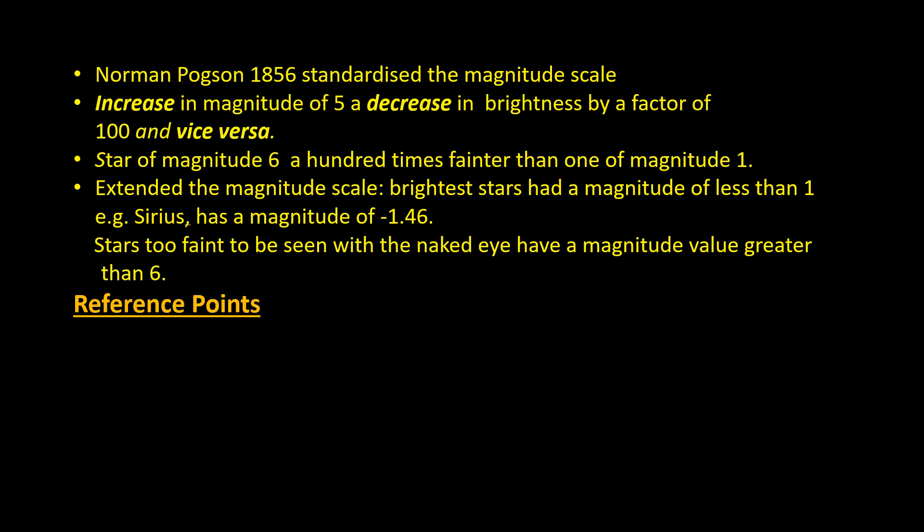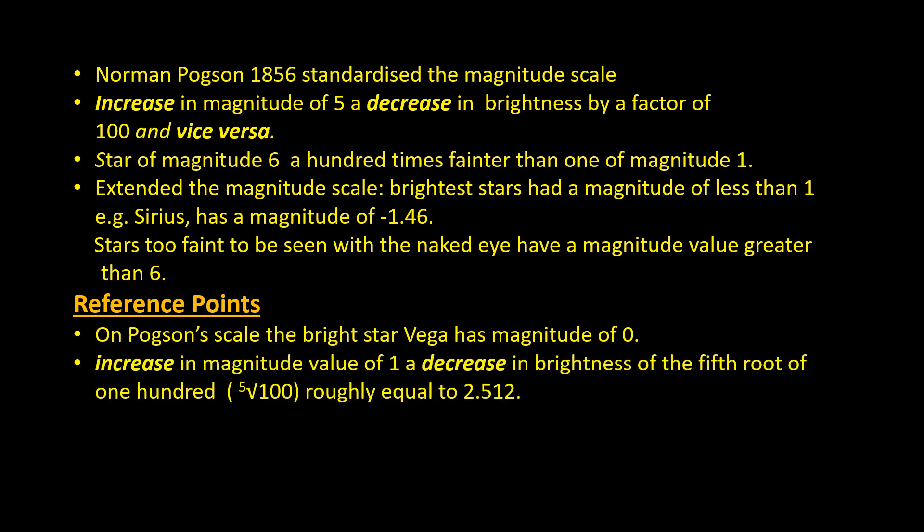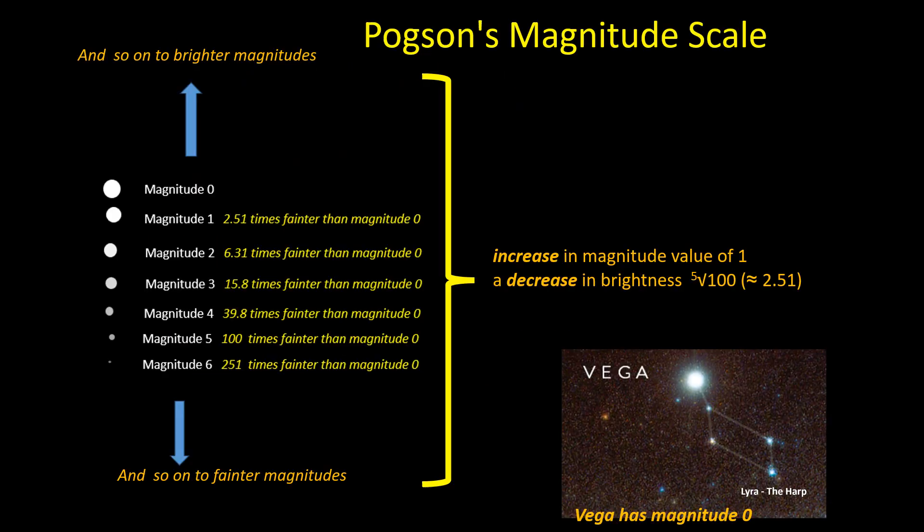Any scale must have at least one reference point. For example, on the centigrade scale 0 degrees is the freezing point of water and 100 degrees its boiling point. On Pogson's scale the bright star Vega in the constellation Lyra was given a magnitude of 0 and an increase in magnitude value of 1 a decrease in brightness of the fifth root of 100 which is roughly equal to 2.512. And here is a summary of Pogson's scale.